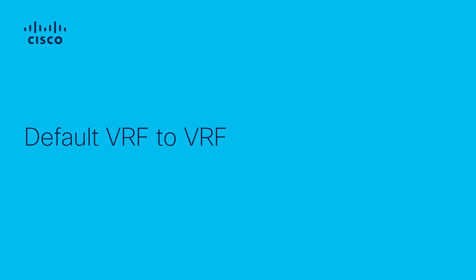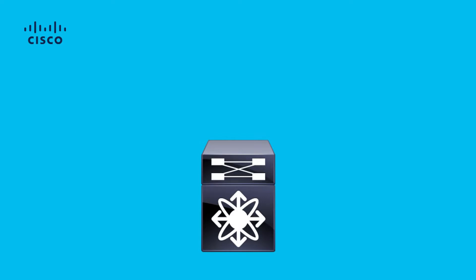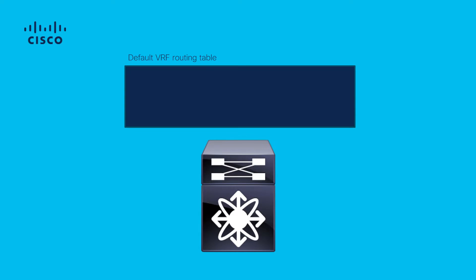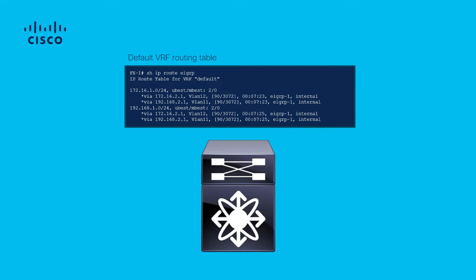Default VRF to VRF. In this case, Nexus has received two routes in its default VRF via EIGRP. The configuration leaks the routes into VRF blue. For the purpose of this example, only the route 192.168.1.0/24 is leaked.